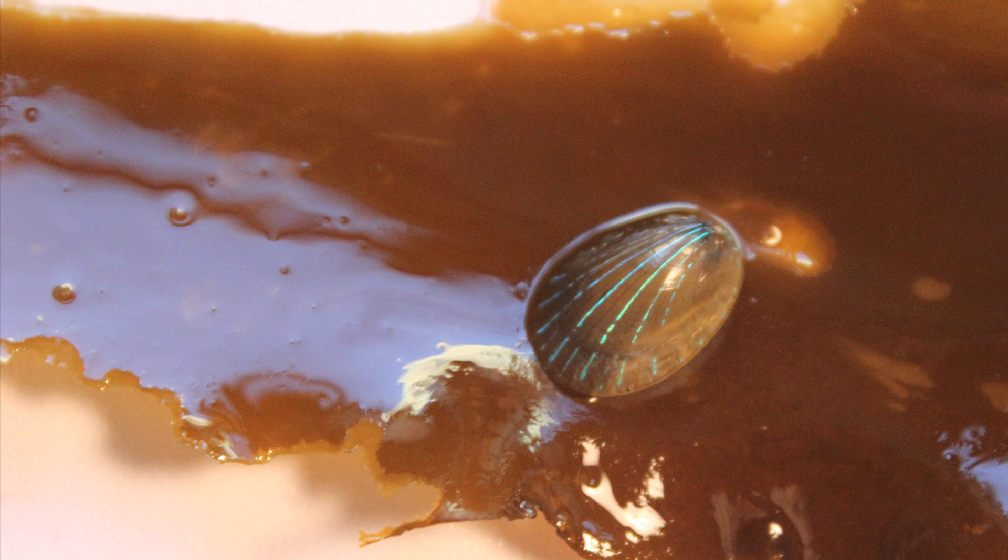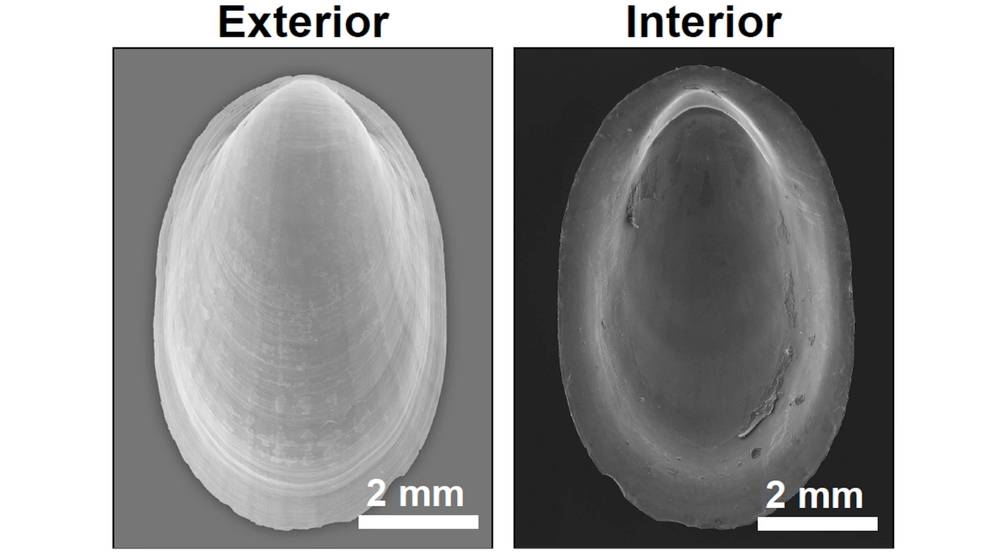First, the researchers scanned the surface of the limpet's shell and found no structural differences in areas with and without the stripes, an observation that led them to think that perhaps the stripes arose from features embedded deeper in the shell.